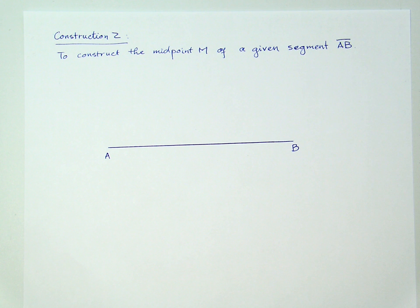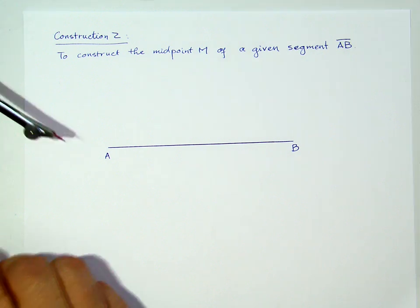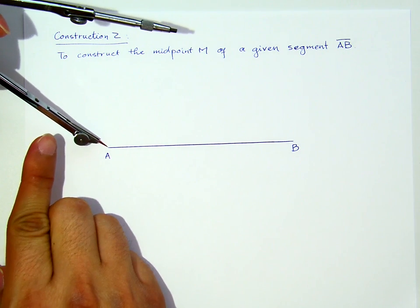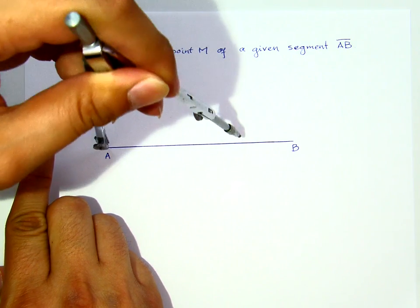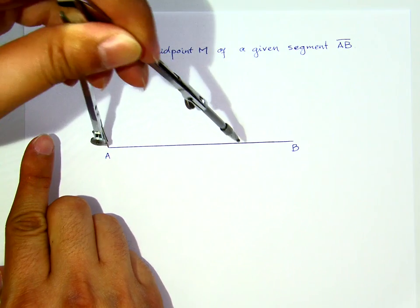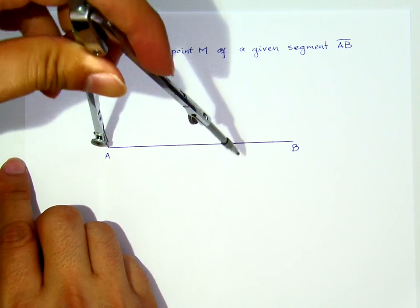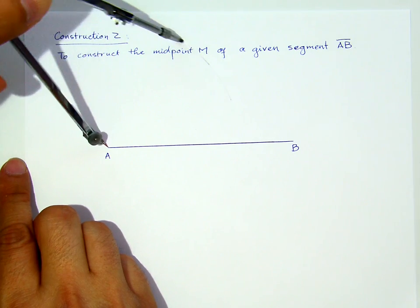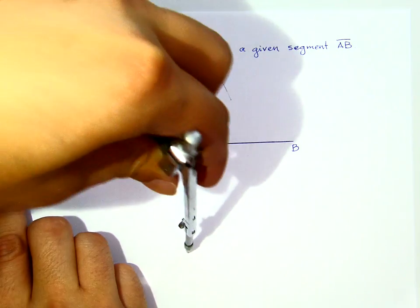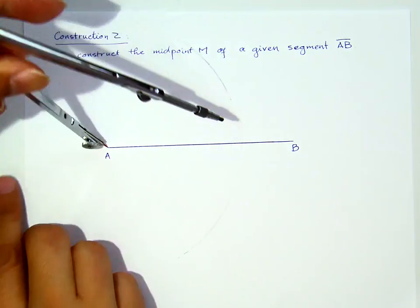First, I will have my compass with me. I put my pivot point at A and open it approximately two thirds to three fourths of that AB. It doesn't have to be precise. Then I swap it on the top and the bottom.